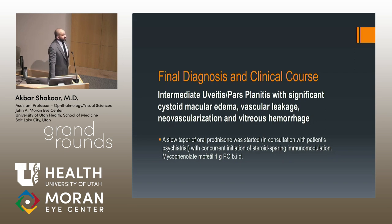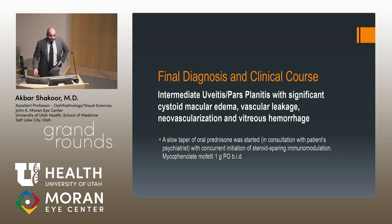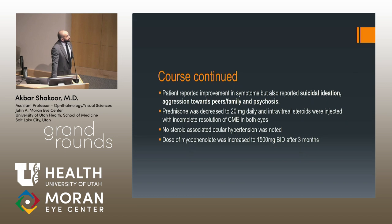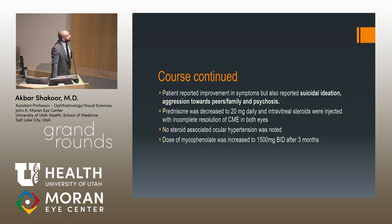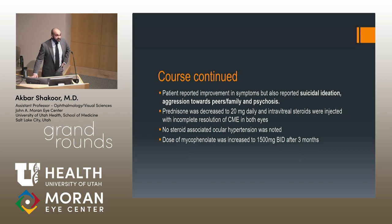In consultation with the patient's psychiatrist — which is important when you start patients on steroids — we started her on prednisone. Concurrently, because this was likely a chronic issue, we started steroid-sparing immunomodulation with mycophenolate at one gram twice daily. Unfortunately on steroids, she did report improvement in symptoms, but began to have greater suicidal ideation, aggression towards peers and family, and auditory hallucinations again. Steroids were quickly withdrawn down to 20 milligrams.